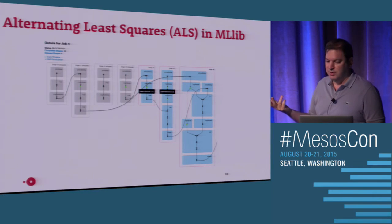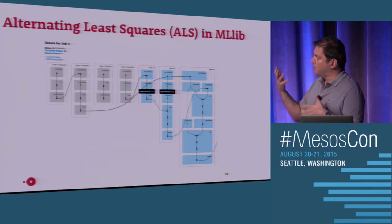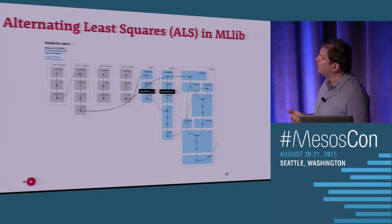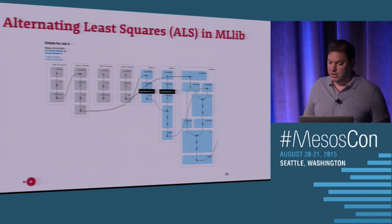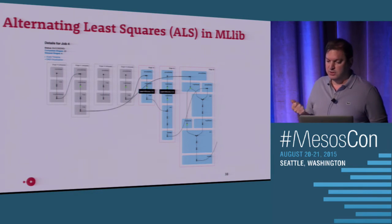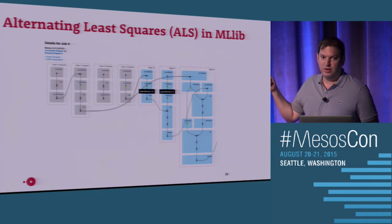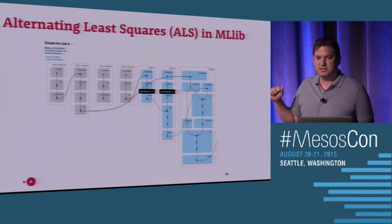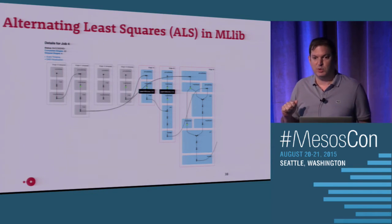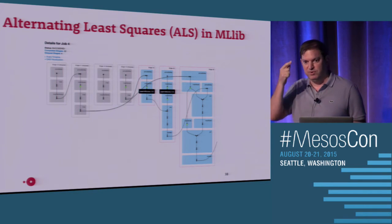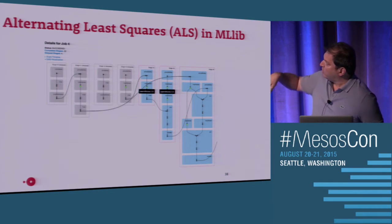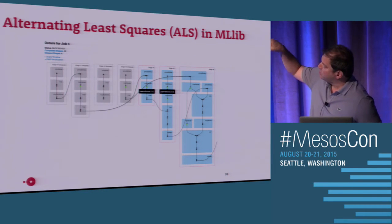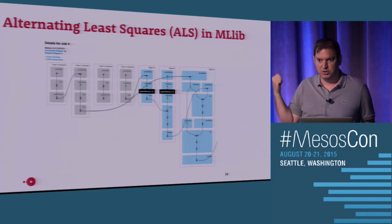This is an example of Alternating Least Squares — a method for matrix multiplications performed in MLlib, the machine learning library for Spark. In the latest release of Apache Spark, when you execute your tasks, the DAG visualization is available so you can see what's going on. Every vertical division is called a stage, and every stage can be executed in the cluster in parallel.